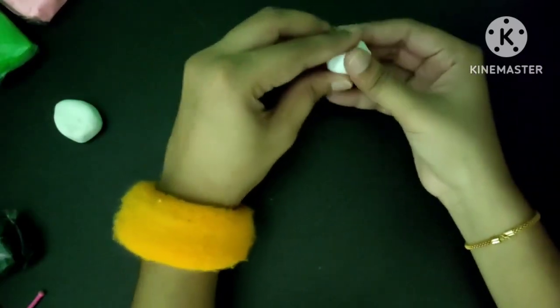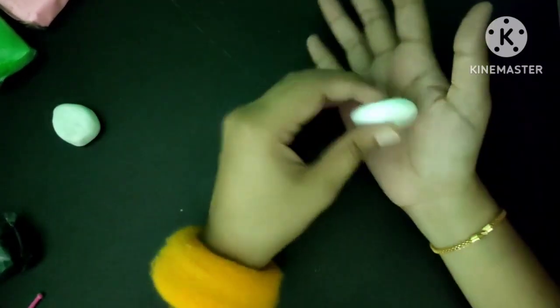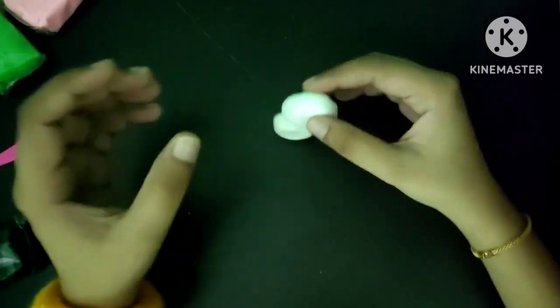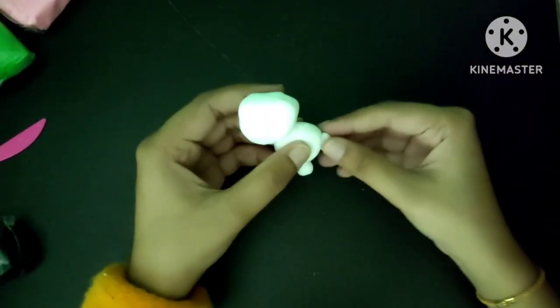Take white clay and make two balls. If you don't make balls, you can make them. Then take two other balls and make a pair.